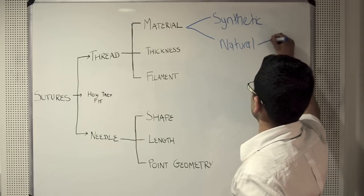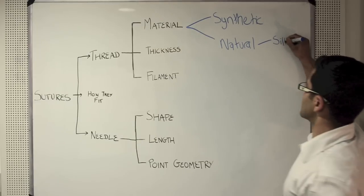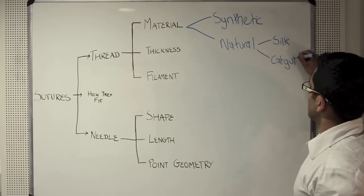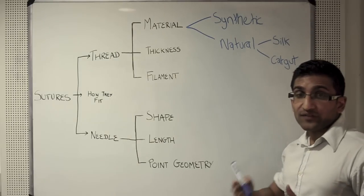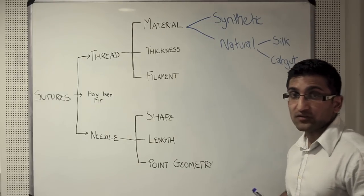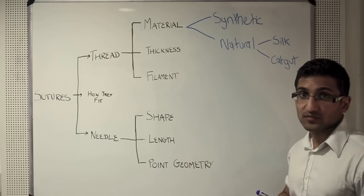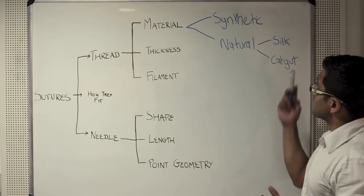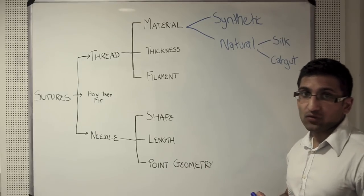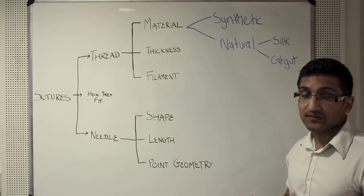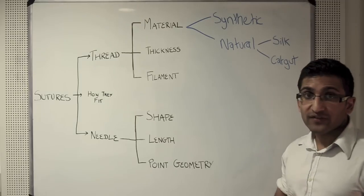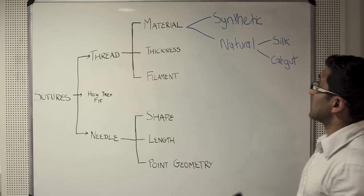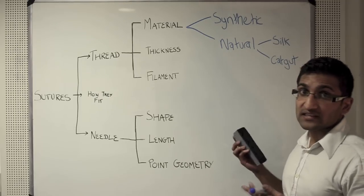Examples of natural materials include silk, made by silk worms, or catgut, made from the gut of cattle. Convention is moving towards synthetic materials due to their improved profiles in terms of tissue reactivity and versatility. Specifically with silk there are concerns about tissue reactivity, and with catgut there are fears about prion transmission and BSE transmission, which is why these are less and less in fashion.